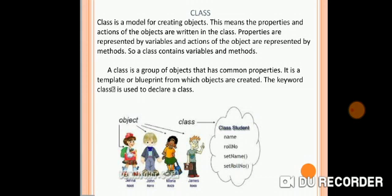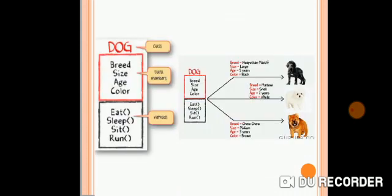A class is a group of objects that has common properties. It is a template or blueprint from which objects are created. For example, there is a class 'Student' — it has a name and roll number. Similarly, in the dog example, 'Dog' is the class. The data members — that is, the variables — are breed, size, age, and color.